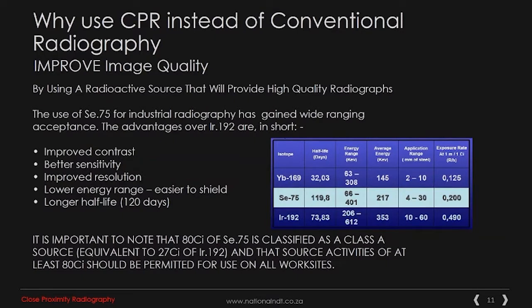With a 120-day half-life, Selenium 75 is considerably in excess of the 73.83-day half-life for the conventional Iridium source. It is important to note that 80 curies of Selenium 75 is classified as a Class A source. An 80 curie Selenium 75 is the equivalent of 27 curies of Iridium 192, and source activities of at least 80 curies should be permitted for use on all worksites.